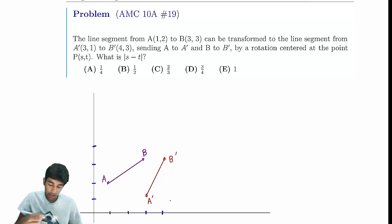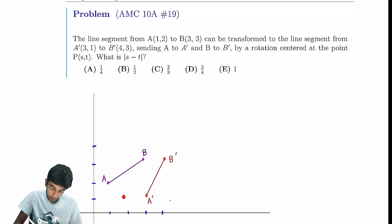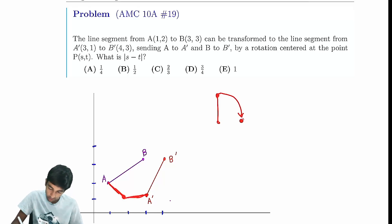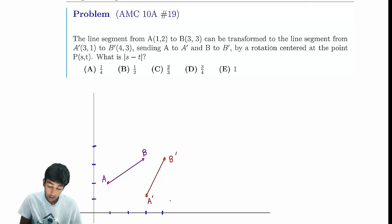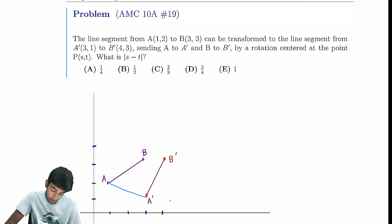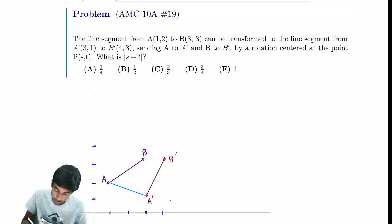The key thing about a rotation is, let's say we're rotating about some point. The distances between the two points at the end must be the same, because you're rotating it — the distance is not going to change. So, what does it mean if some point is equidistant from these two points? It has to lie on the perpendicular bisector.